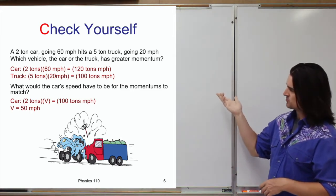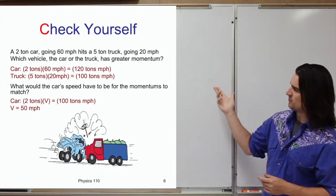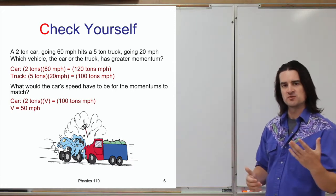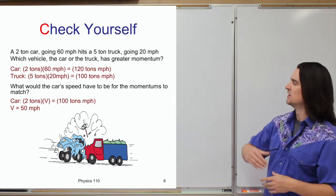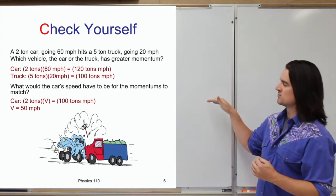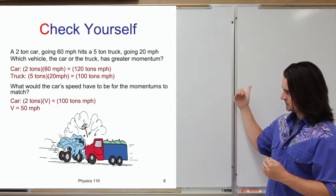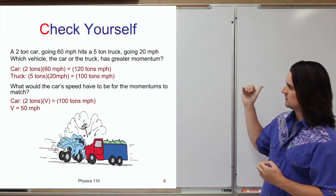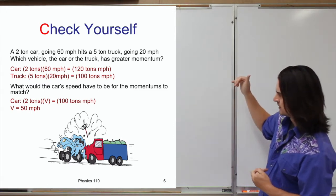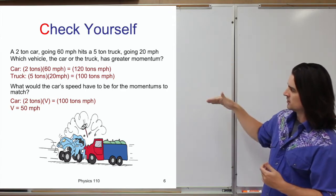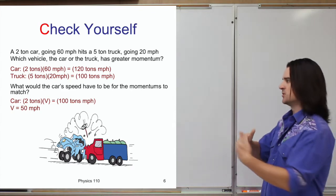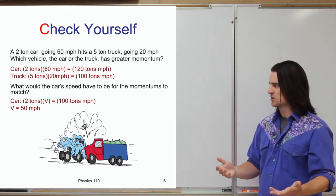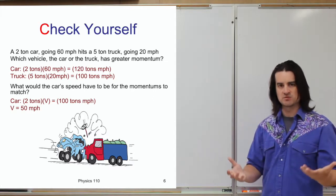So the car's momentum is greater. What would the car's speed have to be for the momentum to be the same as the truck? We know the mass of the car is two tons, and we want the momentum to equal 100 ton-miles per hour. Dividing by two tells us the car's speed should be 50 miles per hour — then each of them would have the same amount of momentum.